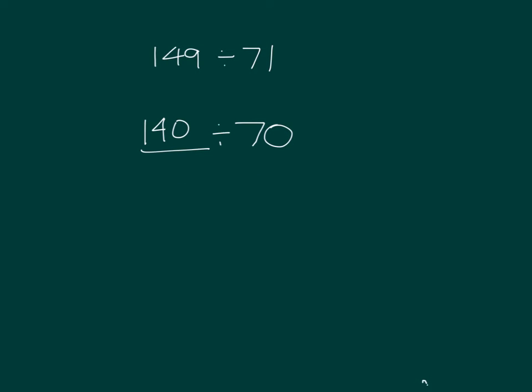140 divided by 70 is equal to 2. 140 divided by 10 would be 14, and 14 divided by 7 does equal to 2. So our estimated quotient is 2. 149 divided by 71 is about 2.